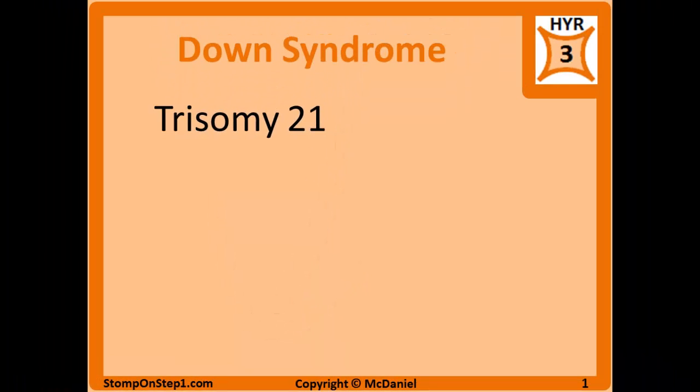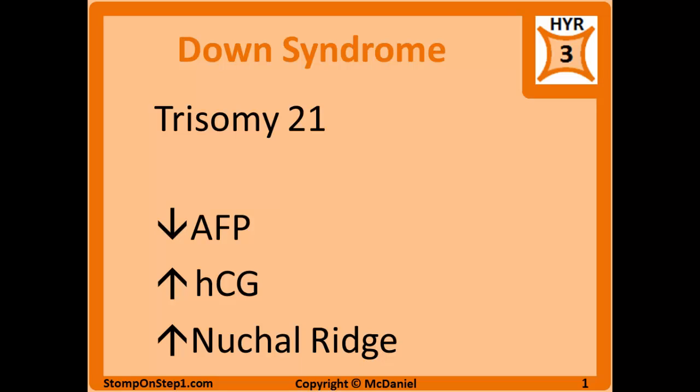Down syndrome is trisomy 21, meaning you have 3 chromosome 21s instead of the traditional 2. It's caused by nondisjunction during meiosis, which leads to an extra chromosome 21 being present, so instead of having 46 chromosomes you now have 47. It's often diagnosed before the baby is born through blood tests for alpha-fetoprotein or AFP and human chorionic gonadotropin or HCG. The mother's blood test will show low AFP and high HCG in Down syndrome.